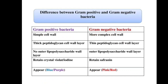Now we will see the differences between gram-positive and gram-negative bacteria. Gram-positive bacteria have a simple, thick peptidoglycan cell wall with no outer lipopolysaccharide layer, while gram-negative bacteria have a more complex, thin peptidoglycan cell wall with an outer lipopolysaccharide layer. Gram-positive bacteria retain crystal violet or iodine stain and appear blue or purple in color. Gram-negative bacteria retain safranin and appear pink or red in color.